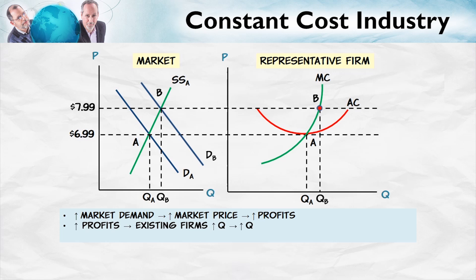Those above-normal profits are going to attract other firms. Other firms are going to say, 'I want a piece of the action.' Remember, when price is above average cost, that's when new firms enter the industry. Entry is going to do two things: on the market side, it shifts out the short-run supply curve to the right, and as that happens, price is pushed down. As price is pushed down, each firm contracts along its marginal cost curve, with profits falling all the way until we reach normal economic profits once again.